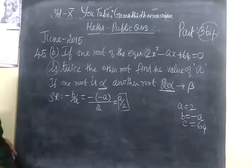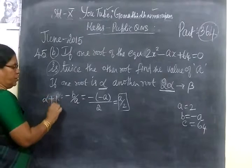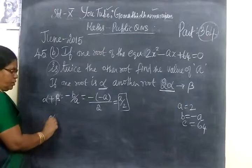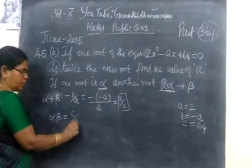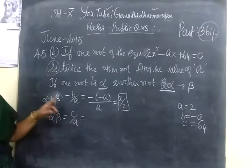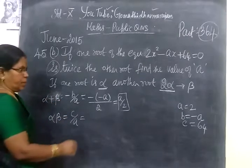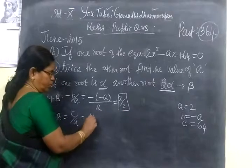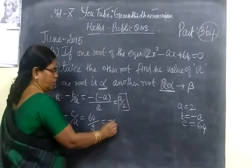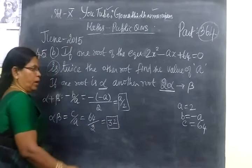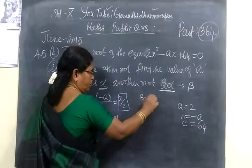And product of the root: alpha beta equal to C by A. C value is 64, A value is 2. So alpha beta equals 32. And what is given? Beta equal to 2 alpha.